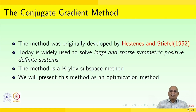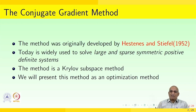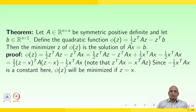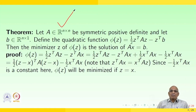Today we are going to learn a specialized method — the conjugate gradient method — which is analogous to an iterative procedure. This method was originally developed by Hestenes and Stiefel in 1952 and is today widely used to solve large and sparse symmetric positive definite systems. The method is a Krylov subspace method. We will present this method as an optimization method. Let A be an n×n symmetric positive definite matrix and let b belong to ℝⁿ.